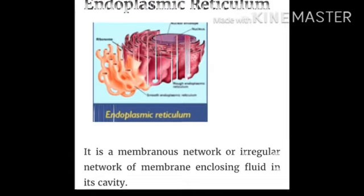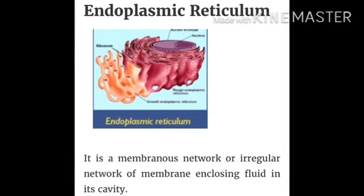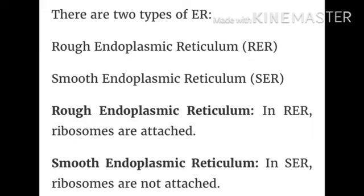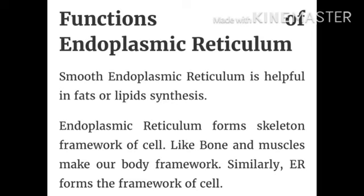This is a little extra — you may read about endoplasmic reticulum in Class 9 or 10. It is a membranous network enclosing fluids in its cavity. Endoplasmic reticulum is of two types: rough endoplasmic reticulum (RER) and smooth endoplasmic reticulum (SER). In rough ER, ribosomes are attached; in smooth ER, ribosomes are not attached.